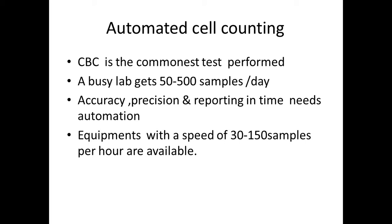When CBCs are referred to a pathology laboratory, a busy lab gets around 50 to 500 samples per day. Performing hemoglobin, WBC count, RBC count, and platelet count for each of those samples with the same accuracy, precision, and within the required time is a very difficult job. That is why automated cell counters are being used in all big hospitals, and nowadays even small laboratories use these automated cell counting machines.